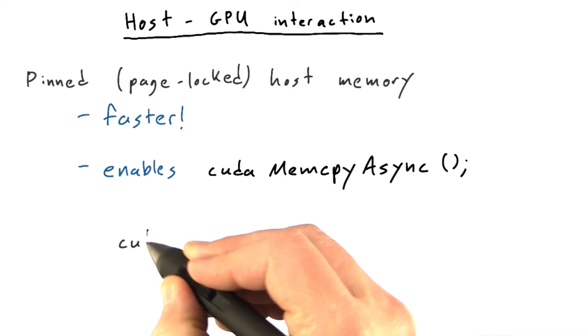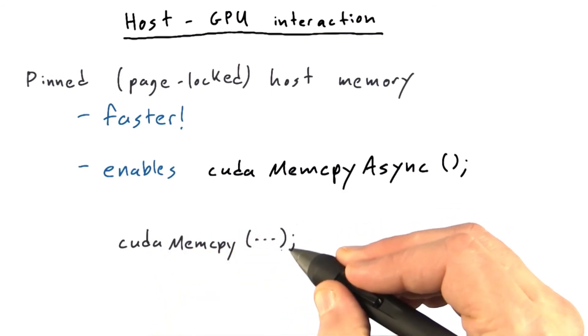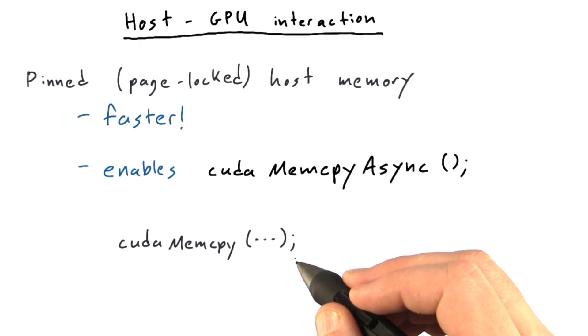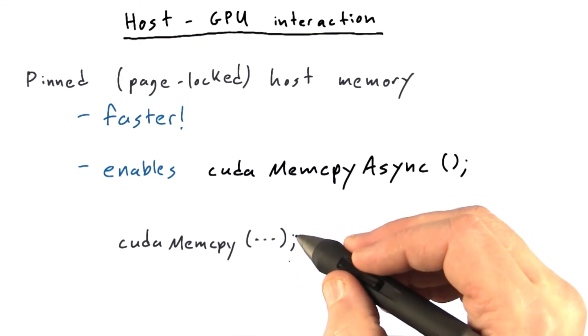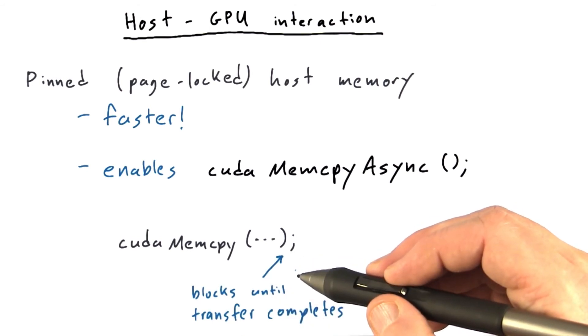How does that work? With CUDA memcopy, which you've been using until now, you make a call to CUDA memcopy, you pass it some information like the pointers and the size in bytes, and whether this is a transfer from device to host or host to device. And then there's a semicolon at the end of that statement. With CUDA memcopy, the CPU blocks until the transfer completes.